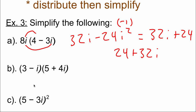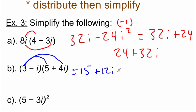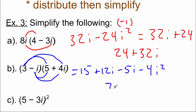In example b, we take three minus i times five plus four i. Treating the i's like variables, we FOIL: three times five is 15; three times four i is plus 12i; negative i times five is negative five i; negative i times four i is negative four i squared. Combining like terms: 12i minus five i is seven i, and negative four i squared is negative four times negative one, which is positive four. Adding 15 gives 19 plus 7i.